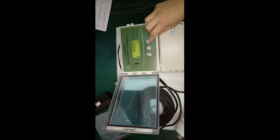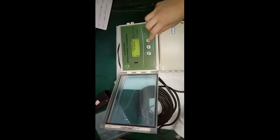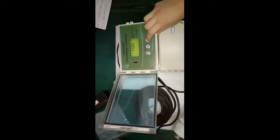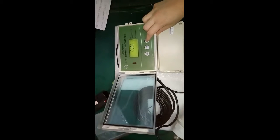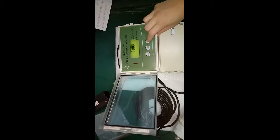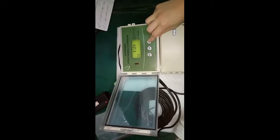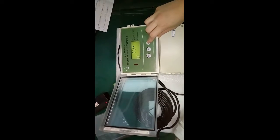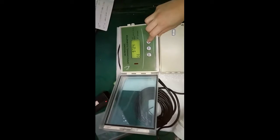Next, this is the course queue of instantaneous flow rate. Now this is the unit selection of instantaneous flow rate. This is the calibration of output current.